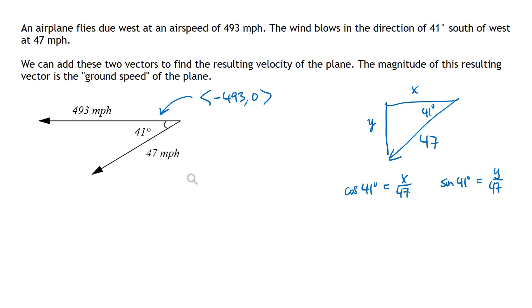Now, using my calculator, either putting my calculator into degree mode or converting those 41 degrees into radians, what I get is x equals approximately 35.4714 and then y is approximately 30.8348.